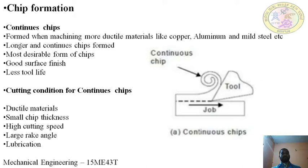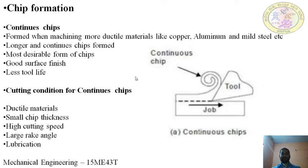Continuous chips are formed when machining ductile materials like copper, aluminium, and mild steel. Ductility means the ability of a material to be drawn into thin wire — copper and aluminium are examples. When such materials are machined, continuous and long chips are formed. This is the most desired form of chip, as it produces good surface finish and good dimensional accuracy.